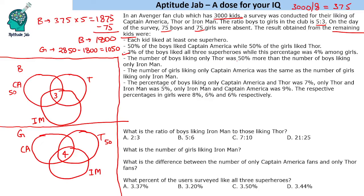The number of boys liking only Thor was 50% more than the number liking only Iron Man — so let only Iron Man be 2x, making only Thor 3x. The number of girls liking only Captain America was the same as those liking only Iron Man. The percentage of boys liking only Captain America and Thor was 7%, only Thor and Iron Man 5%, and only Iron Man and Captain America 9%. The respective percentages for girls were 8%, 6%, and 6%.